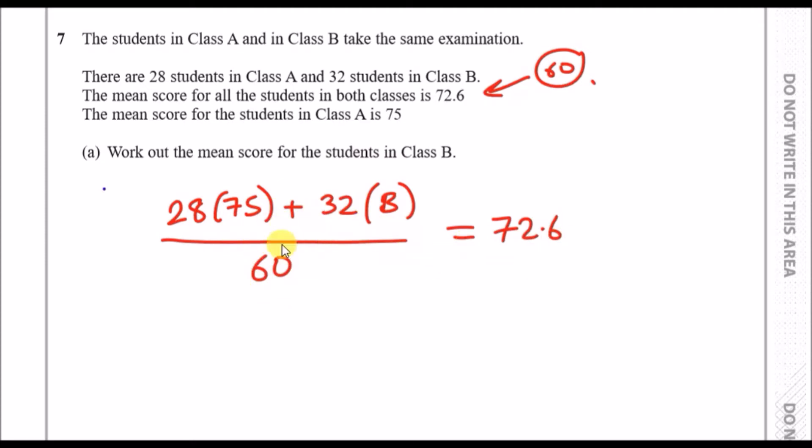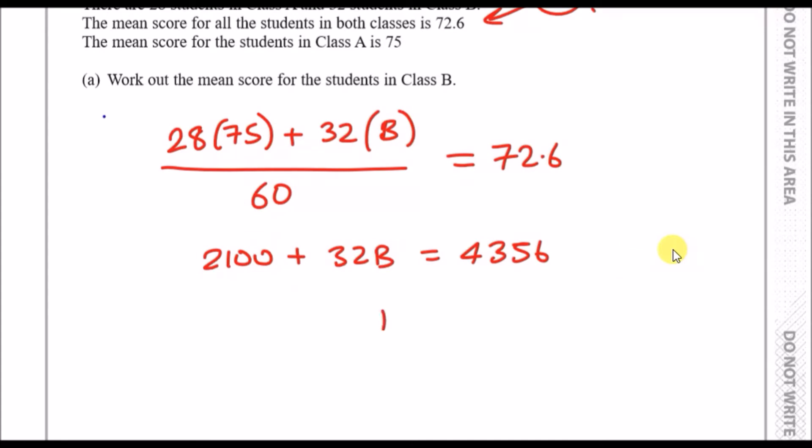Now we're done here. The aim is to rearrange and solve for B. Times 60 across and simplify. 28 times 75 is 2100 plus 32b. Times 60 across, so 72.6 times 60 is 4356. Now rearrange and solve for b. Subtract 2100 and divide by 32. You should get an average B mark of 70.5 per student.